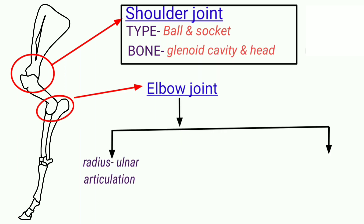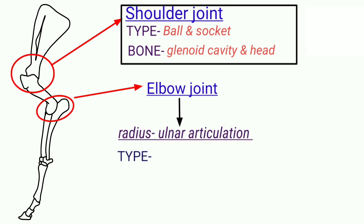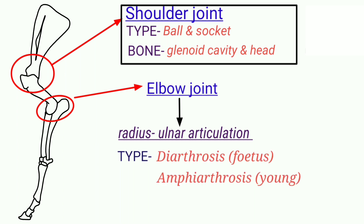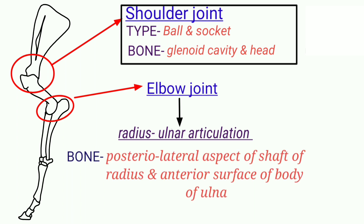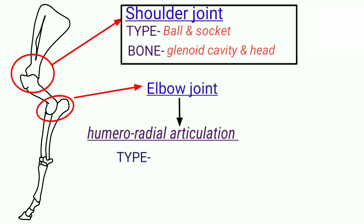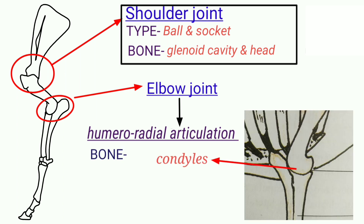Second is the elbow joint. In this, two joints are present: radial-ulnar articulation and humeral-radial articulation. The type of joint in the radial-ulnar articulation is diarthrosis in fetus, amphiarthrosis in young, and synarthrosis in adult. The bones involved are the posterior lateral aspect of the shaft of the radius and the anterior surface of the body of the ulna. The type of joint in humeral-radial articulation is a hinge joint, and the bones involved are the condyles of the humerus articulating with the proximal end of the radius.